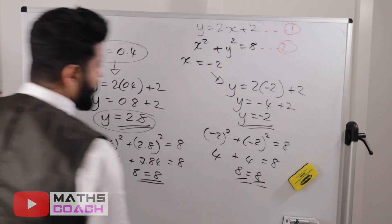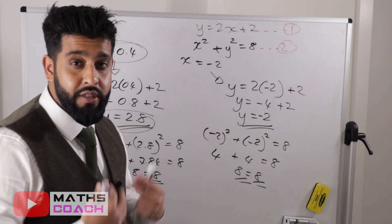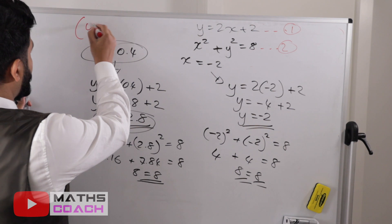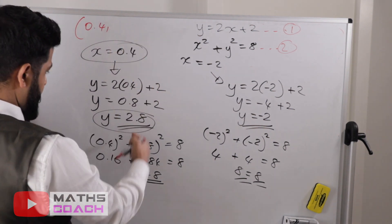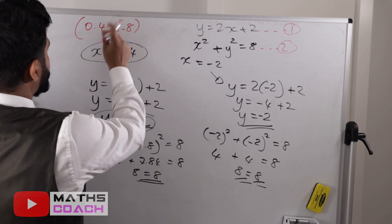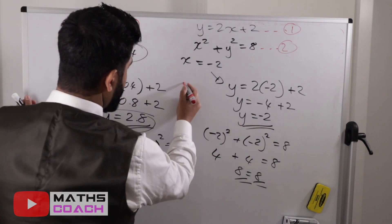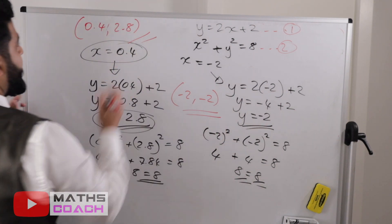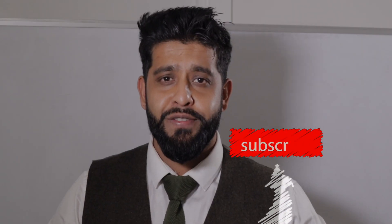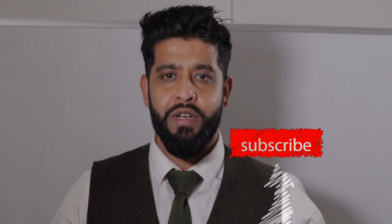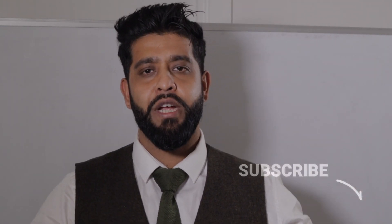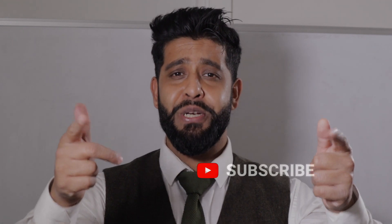Our solutions written in coordinate form are (0.4, 2.8) and (minus 2, minus 2). Thank you for watching, I hope you've enjoyed this video. Please share with your friends and family if you found it beneficial, don't forget to like and subscribe, and see you in the next video. Bye for now!